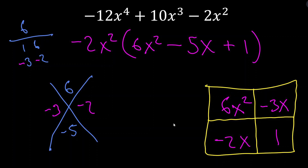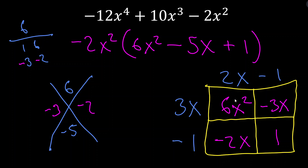Taking the GCF of the top row: 6 and 3 share a 3, and x² and x share an x, so GCF is 3x. What do I multiply 3x by to get 6x²? I need a 2 and an x — so 2x. What do I multiply 2x by to get negative 2x? That needs a negative 1. And negative 1 times negative 1 gives positive 1. So our final fully factored form is negative 2x²(3x − 1)(2x − 1).